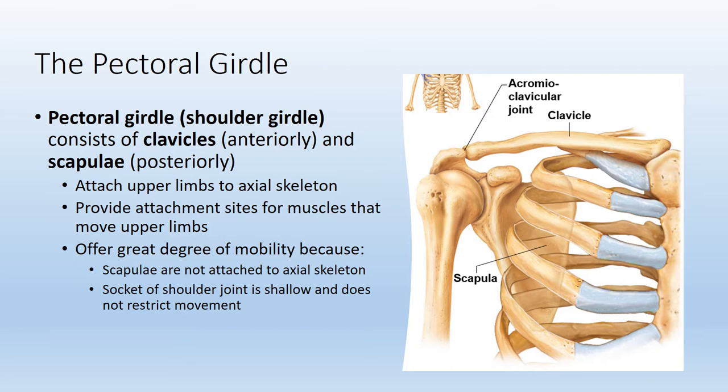Something to note is that the scapula actually have no direct attachment to the axial skeleton. They don't attach to the skull, and although they appear to be up against the thoracic cage, there is no bone-to-bone connection. This translates into high mobility at the shoulder joint — our shoulder joints are highly mobile, but they are also more susceptible to injury due to lack of stability.